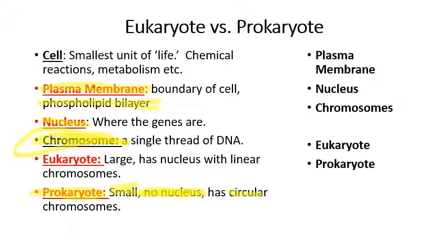Only bacteria, as far as we're aware, have circular chromosomes. The theory is that as organisms became more complicated, more genes were added to the genome, so the circular chromosome just kept getting bigger and bigger until it literally broke into dozens of pieces — and that's what we have now in more advanced organisms.